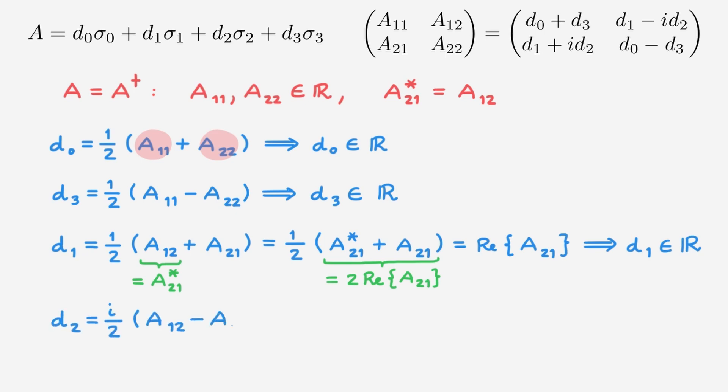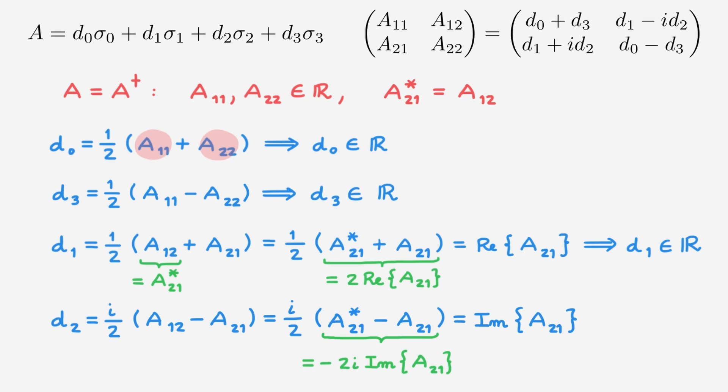Finally, for d2 we have the expression i over 2 times A12 minus A21. Again using the relation between A12 and its complex conjugate, we can rewrite it, and since the difference of a complex number and its complex conjugate is proportional to its imaginary part, d2 is also a real number. In summary: in the first part of this video we showed that any complex 2x2 matrix A can be written in terms of the identity and Pauli matrices with complex expansion coefficients d. We've now shown that if we restrict to Hermitian 2x2 matrices, all expansion coefficients d become real numbers — an important simplification, since Hermitian operators represent physical observables in quantum mechanics.